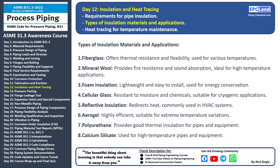Calcium silicate: this material is chosen for high-temperature pipes and equipment due to its properties. Understanding the different types of insulation materials and their applications helps us make informed decisions when designing and maintaining piping systems. Stay tuned for our next topic on heat tracing for temperature maintenance — we're making steady progress through the world of piping engineering.